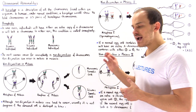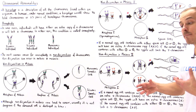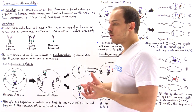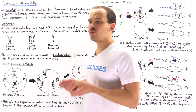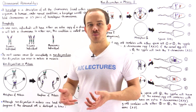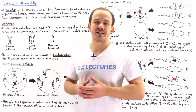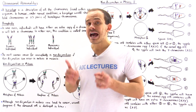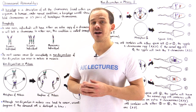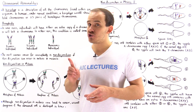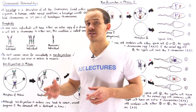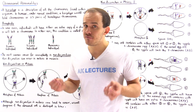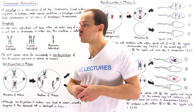A karyotype is basically a pictorial description of all the chromosomes found within that particular organism, within that particular individual. In humans, every normal human karyotype will show 23 pairs of homologous chromosomes, or 46 individual chromosomes.